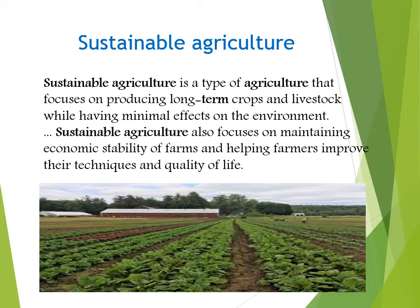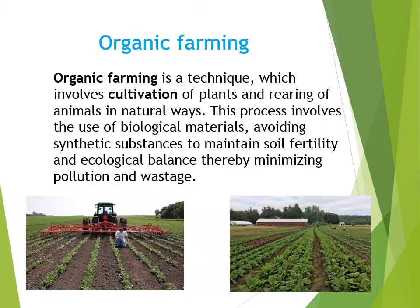Now we will talk about organic farming. We know that continuous use of fertilizers and pesticides in crop fields is harmful not only for us but also for the environment. These chemical fertilizers get mixed with water and cause water pollution. So, to minimize the use of fertilizers and chemicals in our crop fields, we have started a new method of farming called organic farming. It is the practice of raising crops in which there is no use of chemical fertilizers, pesticides, and herbicides. Therefore, there is no toxicity due to pollution of crop plants, soil, water, or air. Organic farming is basically a technique which involves cultivation of plants and rearing of animals in natural ways.